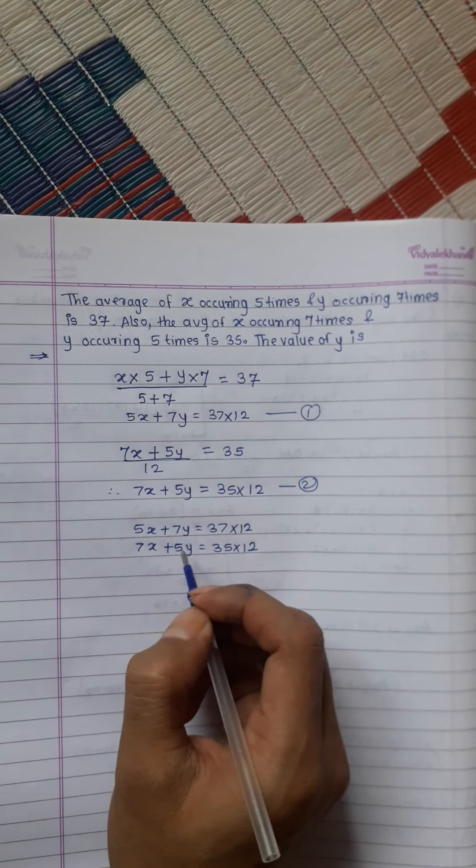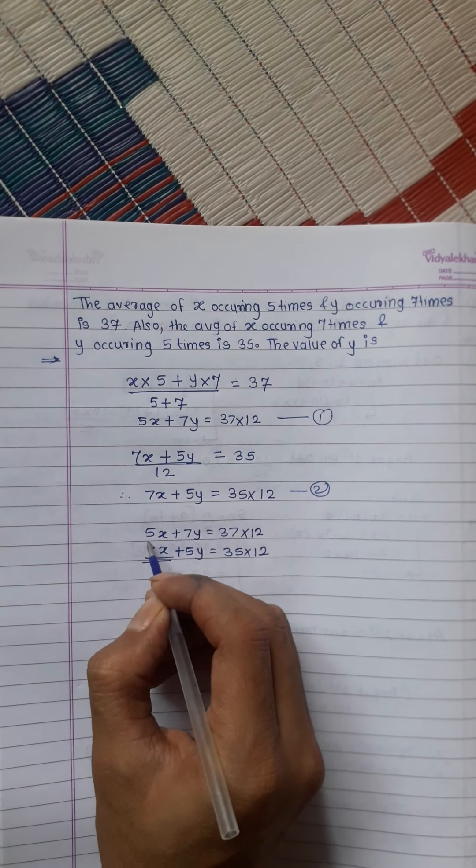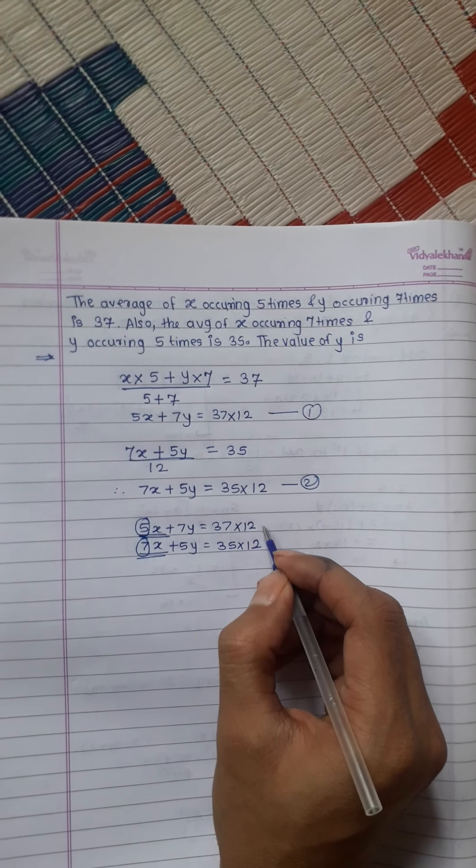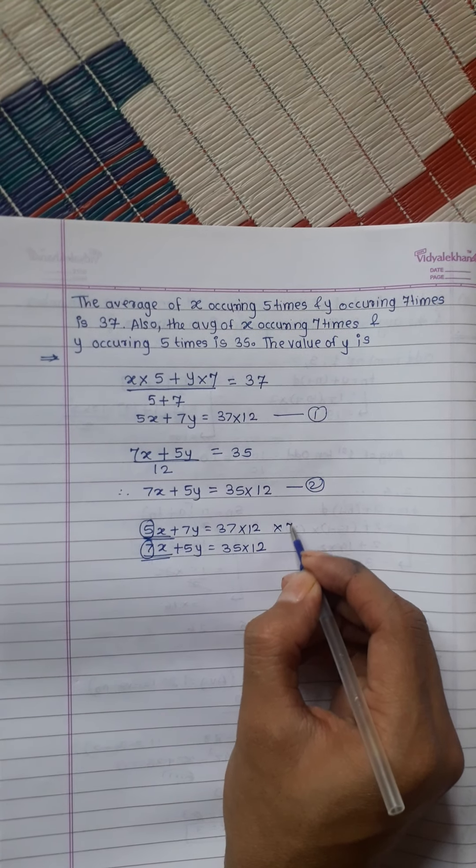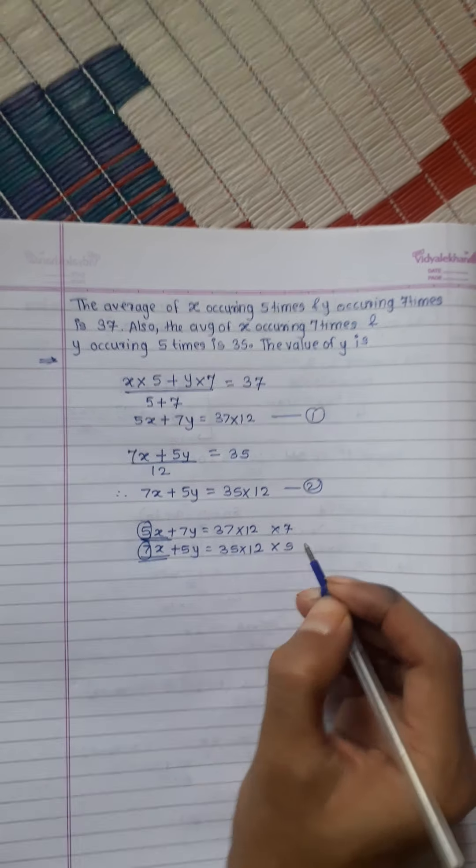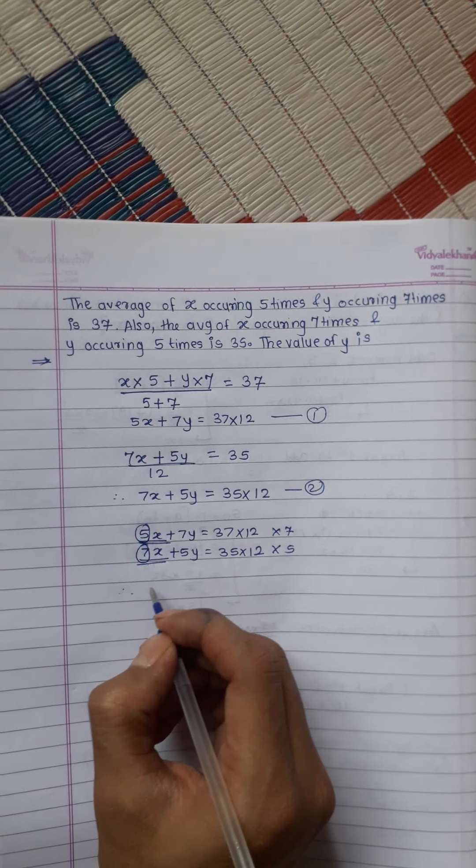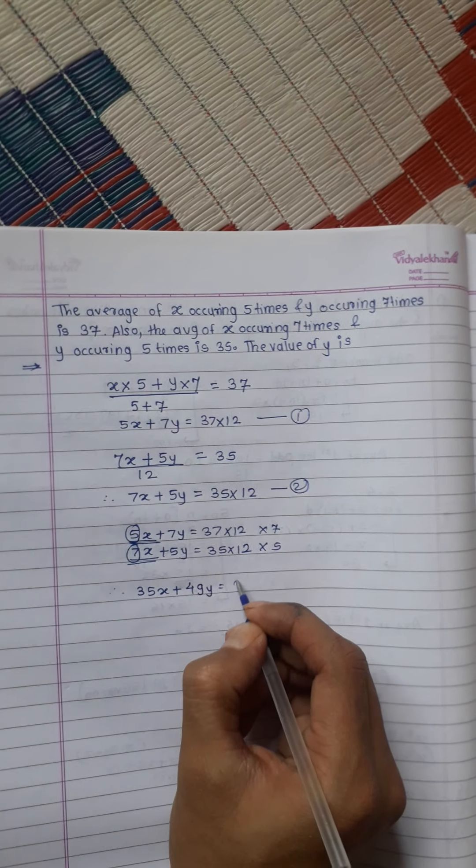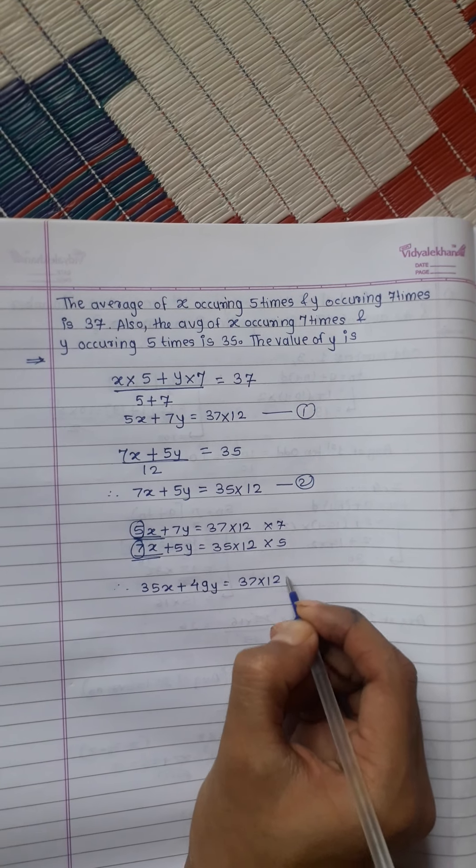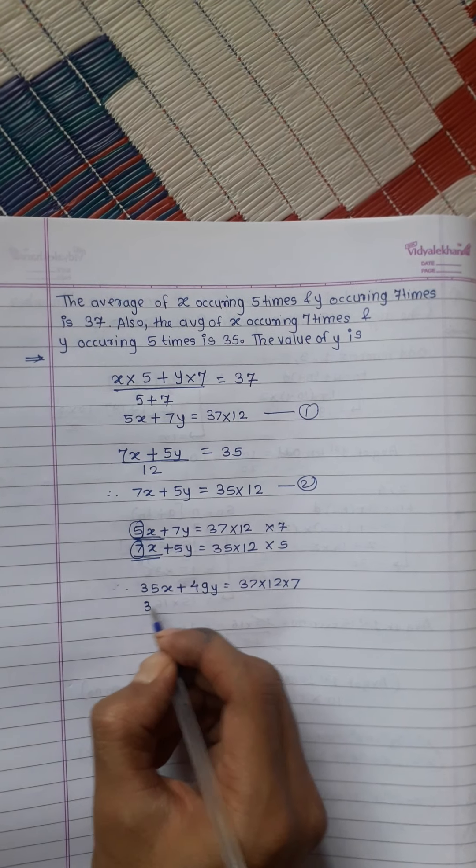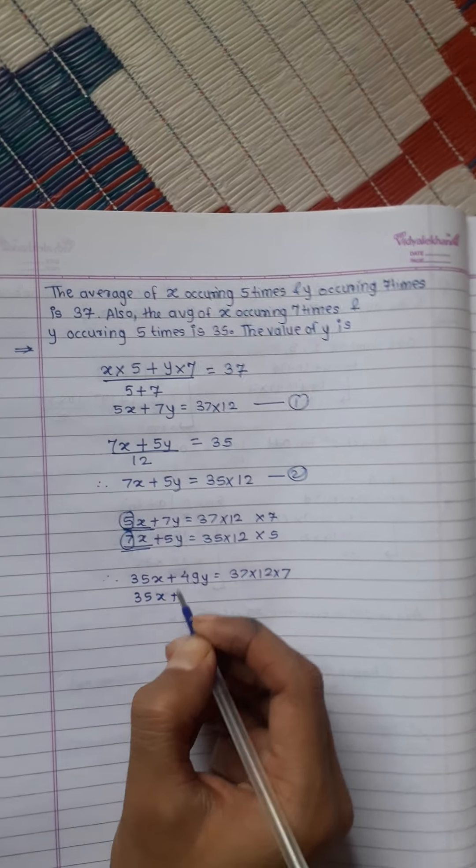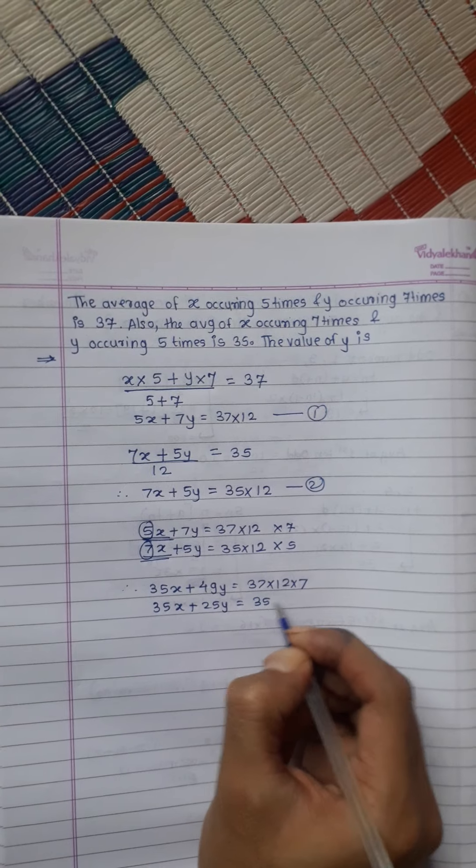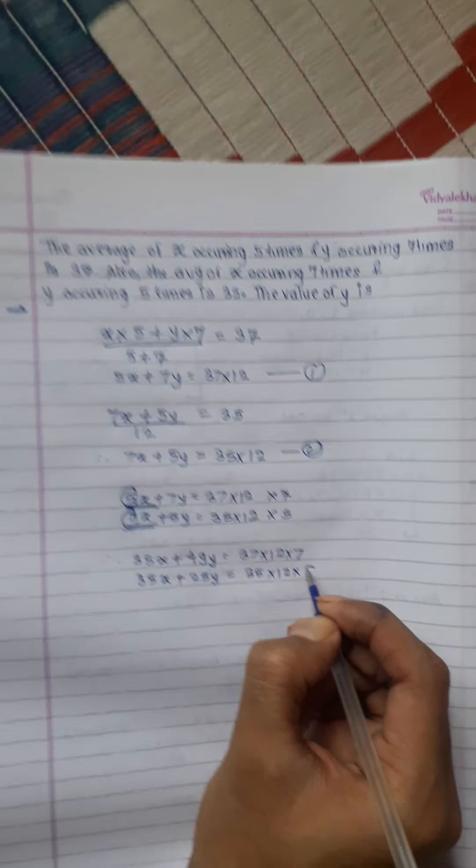Now we want to find the value of y, so we will make the coefficient of x the same. We will multiply the first equation by 7 and the second equation by 5. Therefore, 35x plus 49y equals 37 multiplied by 12 multiplied by 7, and 35x plus 25y equals 35 multiplied by 12 multiplied by 5.